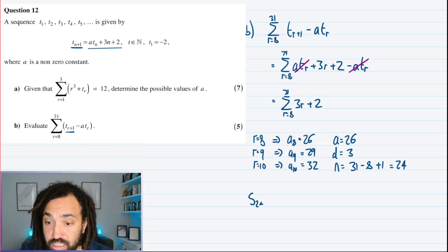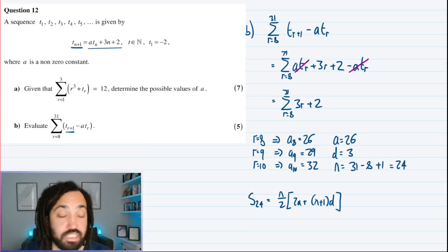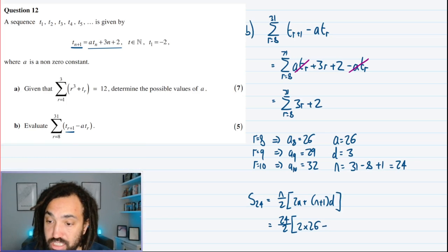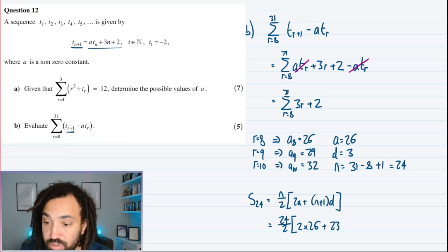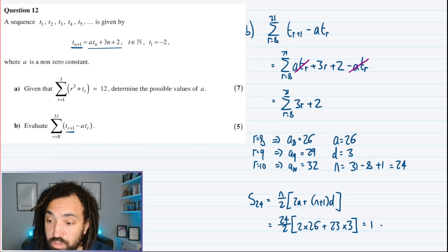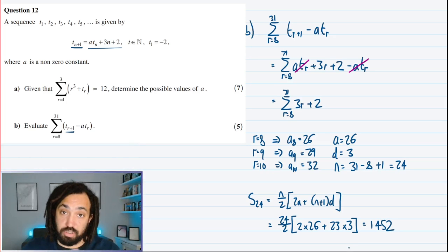So let's do the summation then of 24 terms. So I'm going to use the formula, which is given in the A-level formula books. At least I know it is for Edexcel. So n is 24, 2 times a is 2 times 26, n minus 1 is 23, and multiply that by the difference is 3. I'll put that in my calculator. And I get 1452. Lovely. Right, hope you enjoyed that. I'll see you tomorrow. Bye for now.